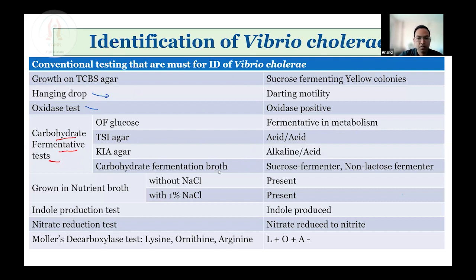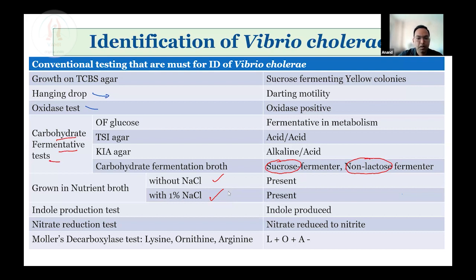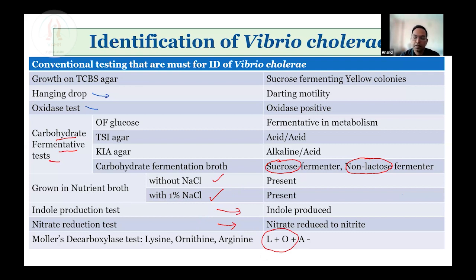Carbohydrate fermentation using broth can also be done. It is a sucrose fermenter and non-lactose fermenter without any gas production. Growth in nutrient broth with and without sodium chloride — because the organism is non-halophilic, it will grow even without sodium chloride and will also grow in the presence of 1% sodium chloride. Indole production is positive, and nitrate reduction test will be positive. Lysine decarboxylation test is a very valuable test in identifying Vibrio species and differentiating the organism from closely related organisms like Aeromonas and Plesiomonas.